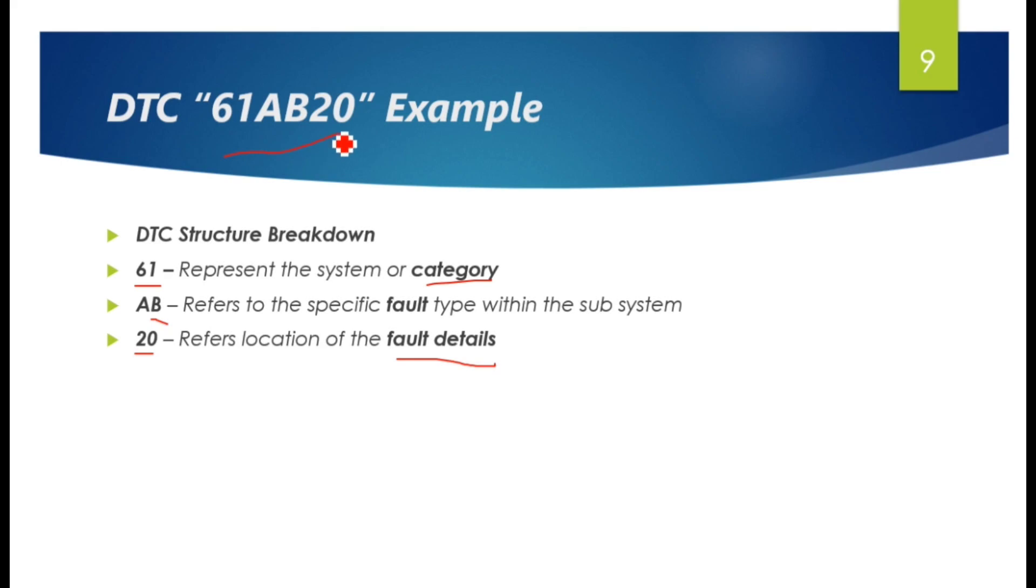If this DTC occurs in a modern car, it might translate to something like AC pressure sensor circuit range or performance issue. This means the air conditioning pressure sensor is not reading values within the expected range, potentially due to a bad sensor, a wiring issue, or malfunctioning system.